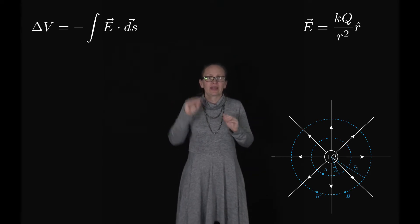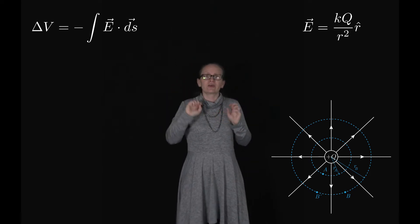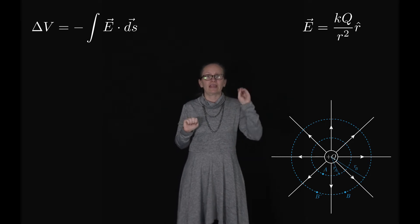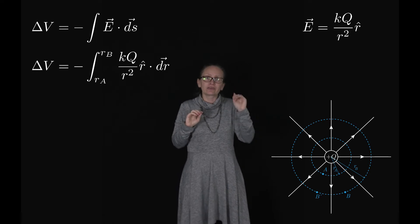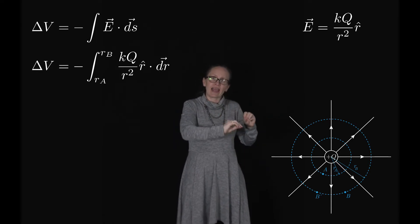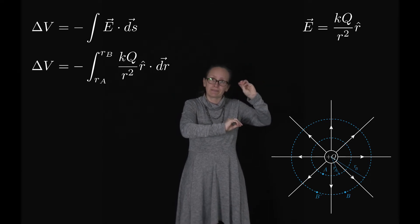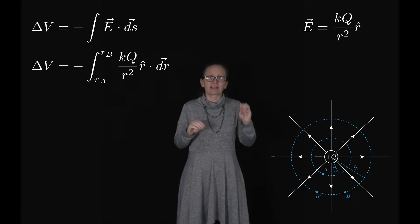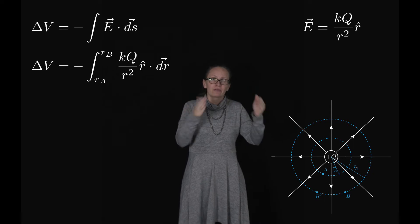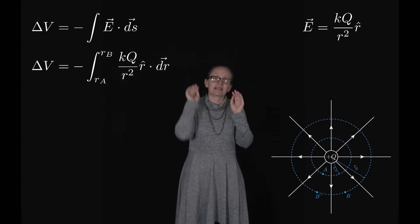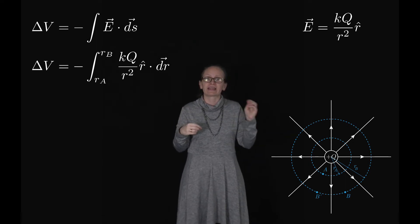Now let's use our equations to work out the potential difference between A and B'. ΔV = -∫E·dS. We set the limits from RA to RB, since B' is also at radius RB. The electric field is KQ/R² times R̂, and since we're moving radially, the displacement is dr in the R̂ direction.